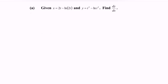Hello everyone, welcome to this channel. In this video, I'm going to discuss an example of parametric differentiation. Given x equals to 2t minus ln(2t), and y equals to t squared minus ln(t squared).